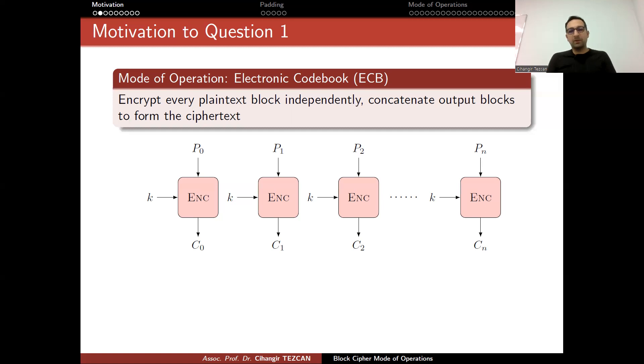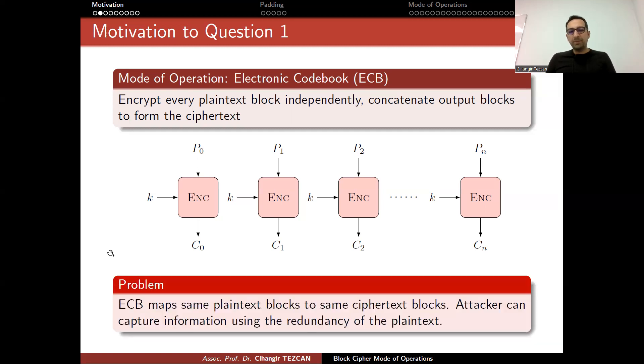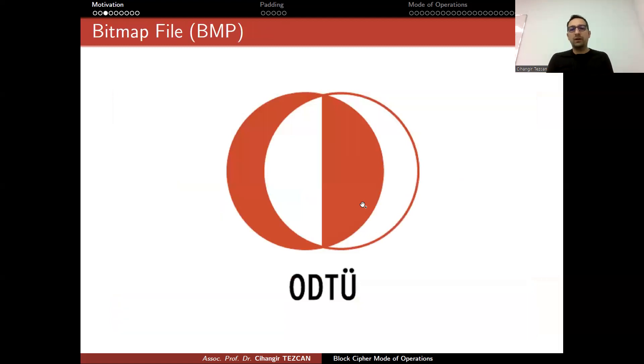This method is not acceptable because ECB maps same plaintext blocks to same ciphertext blocks. Attacker can capture information using the redundancy of the plaintext. So if p1 and p2 are the same, then c1 and c2 are the same. And since we always assume that the enemy captures the ciphertext because the communication channel is insecure, they will see that c1 and c2 are identical, and they may learn more about the plaintext just from this information.